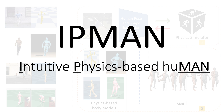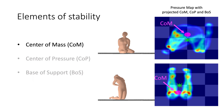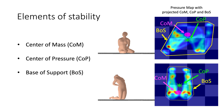We present an alternative to classic physics simulation. Specifically, we introduce IPMAN, a simple, fast, and fully differentiable solution that uses the SMPL body model and integrates physical reasoning into human pose and shape estimation methods. IPMAN uses novel intuitive physics terms that exploit the interaction between the body center of mass, center of pressure, and base of support — key biomechanical elements used in stability analysis.